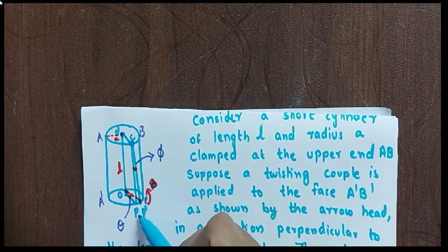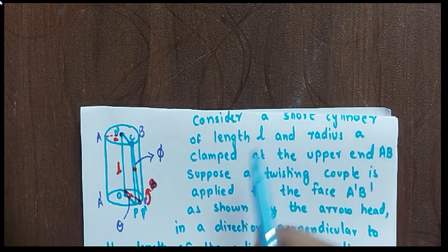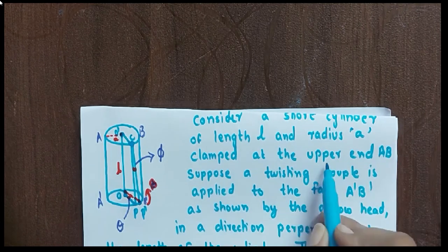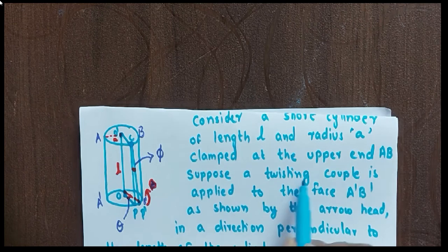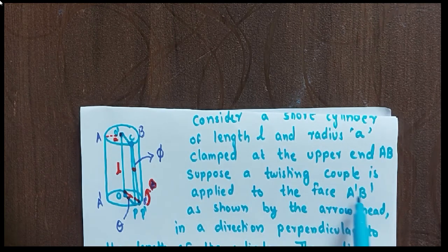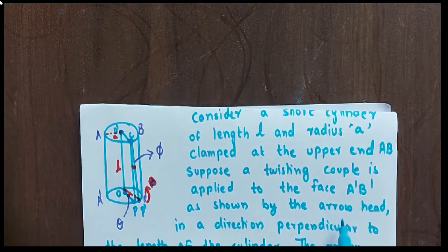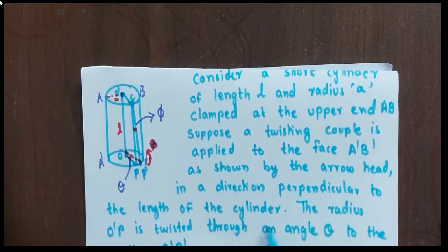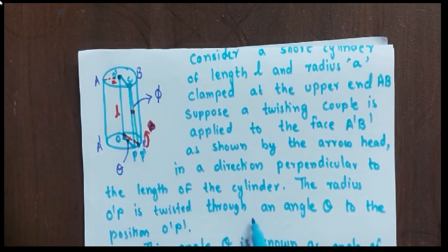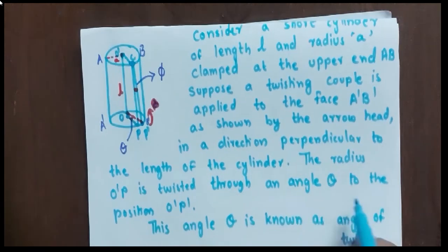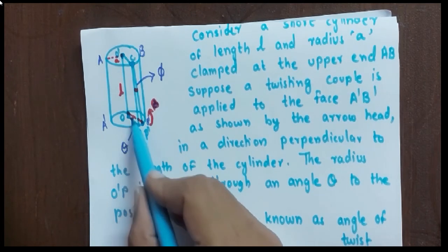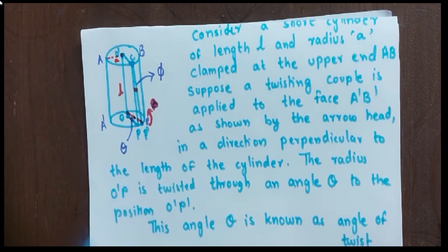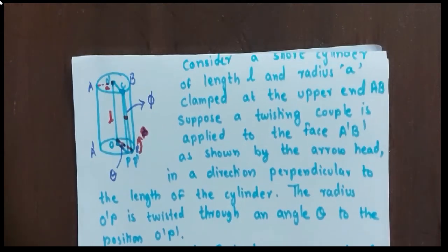Consider a short cylinder of length L and radius a, clamped at the upper end AB. A twisting couple is applied to the face A'B' as shown by the arrowhead, in the direction perpendicular to the length of the cylinder. The radius O'P is twisted through an angle theta to the position O'P'. The line also makes an angle phi. This angle theta is known as the angle of twist.